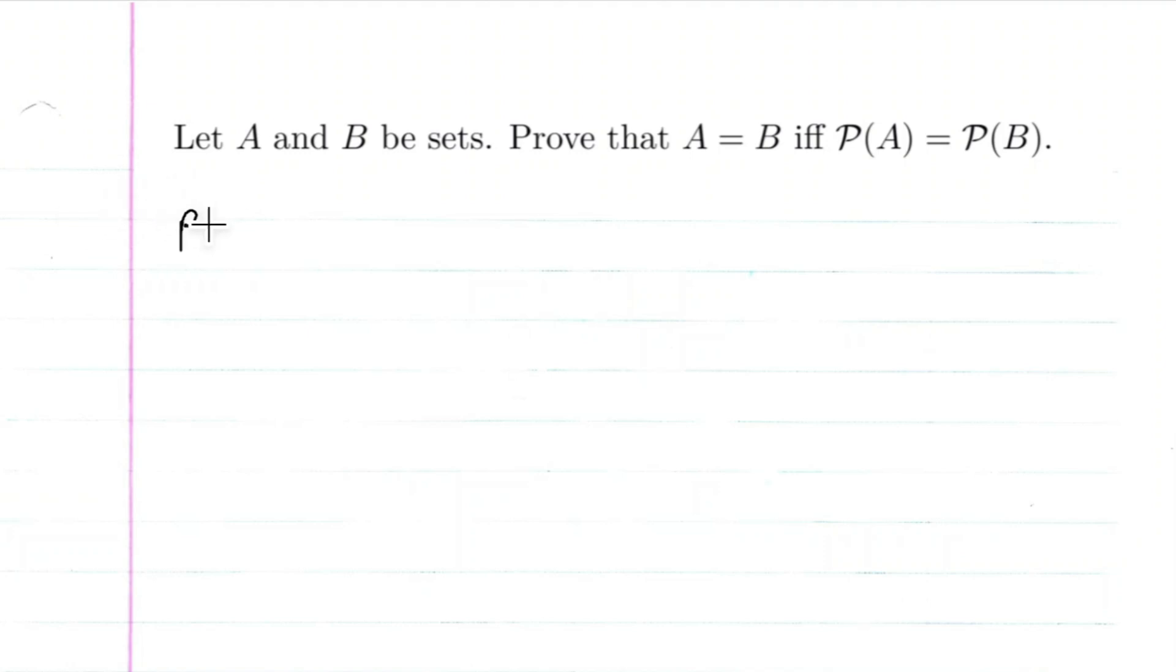Okay, so let's go ahead and start this proof. Let's start with A is equal to B. We know if A is equal to B, this basically means that A is a subset of B and B is a subset of A.